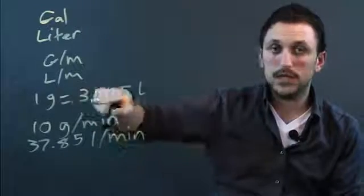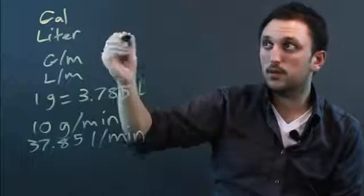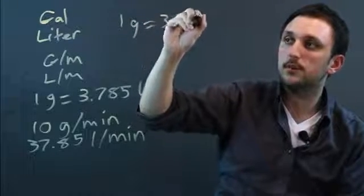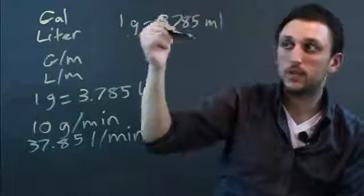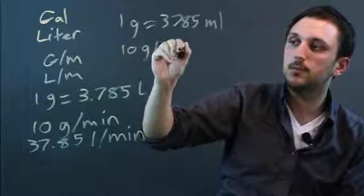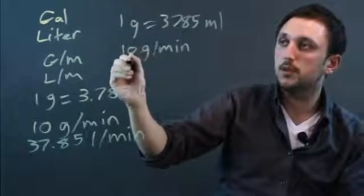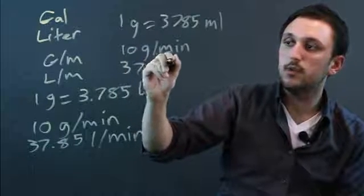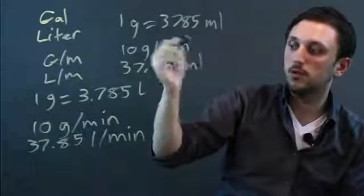And if one gallon equals 3.785 liters, that means one gallon equals 3,785 milliliters, roughly. So 10 gallons per minute is the same as 37,850 milliliters per minute.